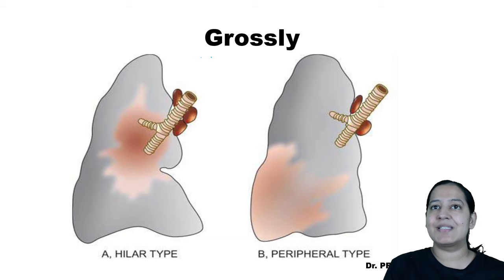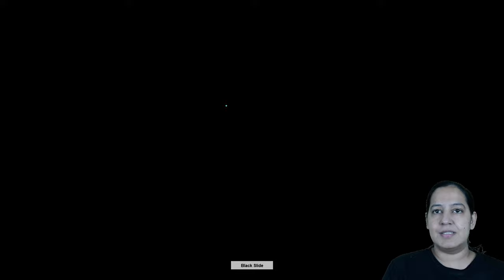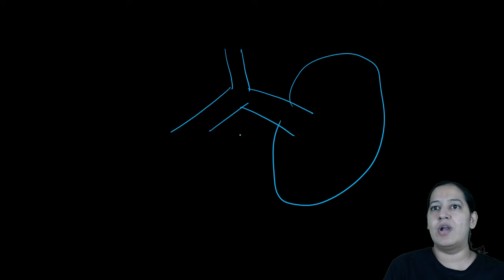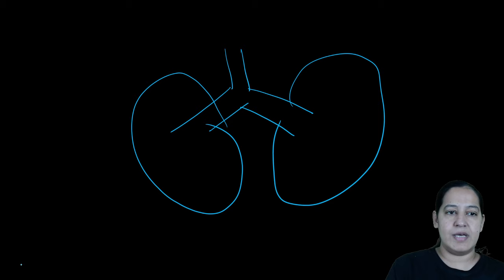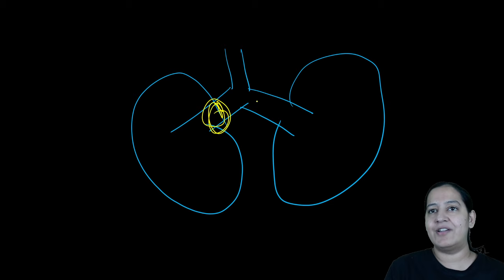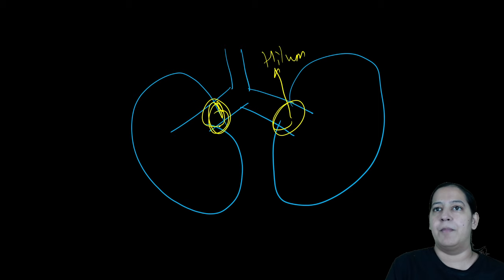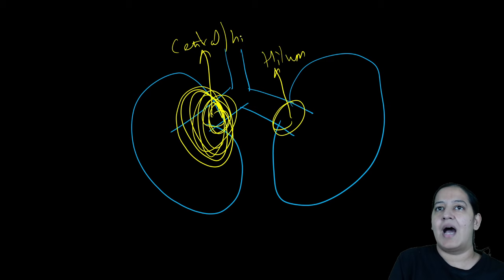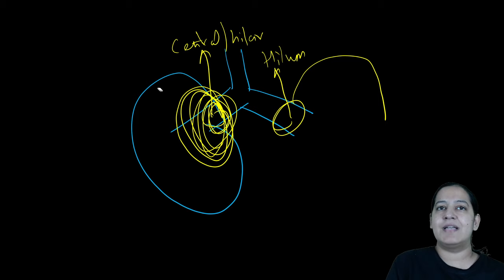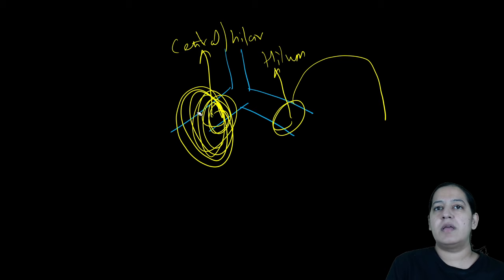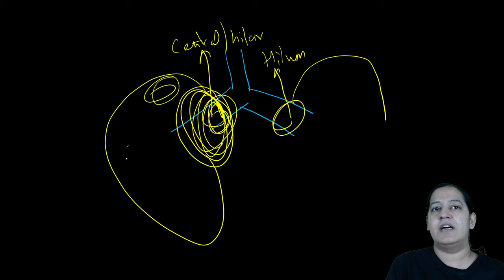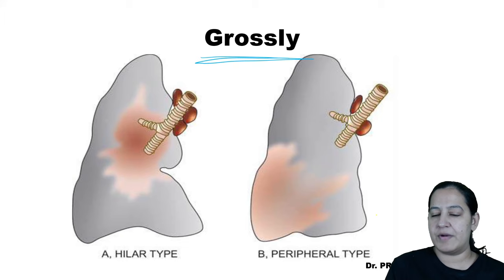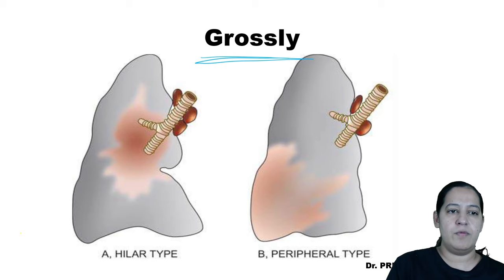Moving to gross/macroscopy: there are two types of presentation. The lung has a trachea and two bronchi. The point where the bronchus enters the lung is known as the hilum. Tumors present here at the hilum are known as central or hilar tumors. Tumors can also present anywhere at the periphery, which is known as peripheral presentation.